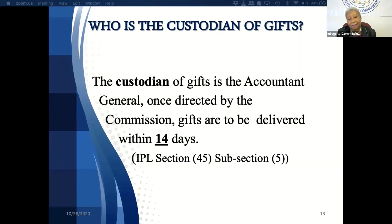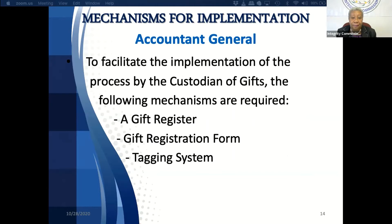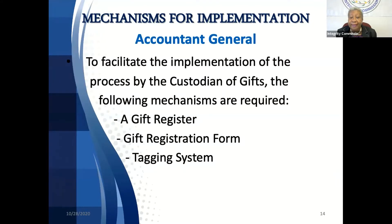Who is the custodian of gifts? Once you receive a gift and disclose it, where does it go? The custodian of gifts is the accountant general. Once directed by the commission, gifts are to be delivered within 14 days, in keeping with section 45, subsection 5 of the IPL Act. The accountant general must be prepared to receive gifts. To facilitate implementation of the process, the following mechanisms are required: a gift register, a gift registration form, and a tagging system.